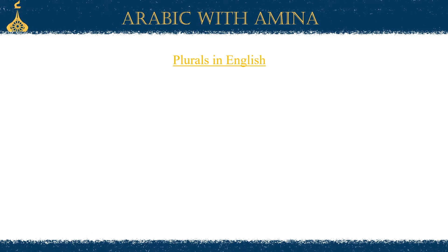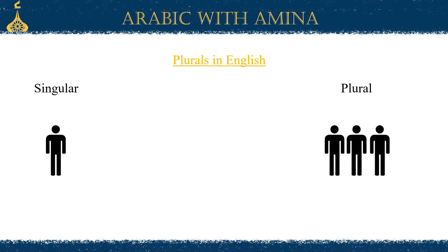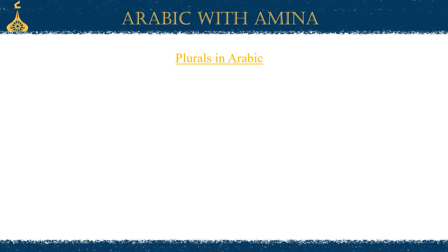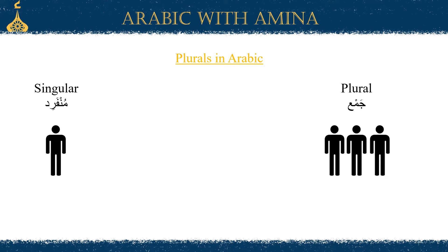In English, we already know what the plurals are. If it's one thing, it's singular, and if it's more than one, it's plural. In Arabic, it's a little bit different. In Arabic, we do have a singular where it is one thing, called munferid, and then there is a plural just like English, but it's a little bit different. Plural in Arabic is jama'. But plural in Arabic refers to a number of three or more, unlike English where two can be a plural.